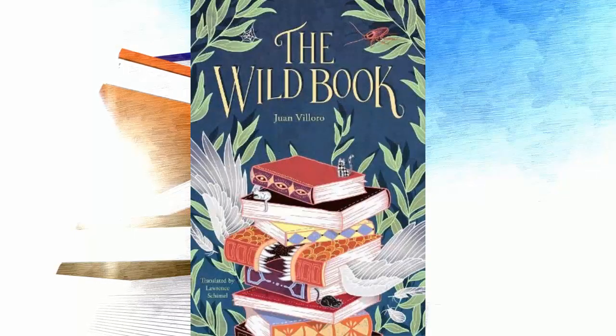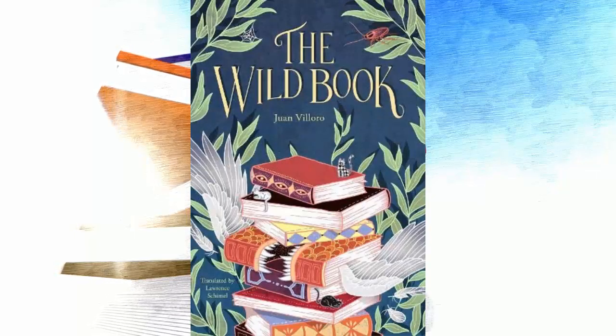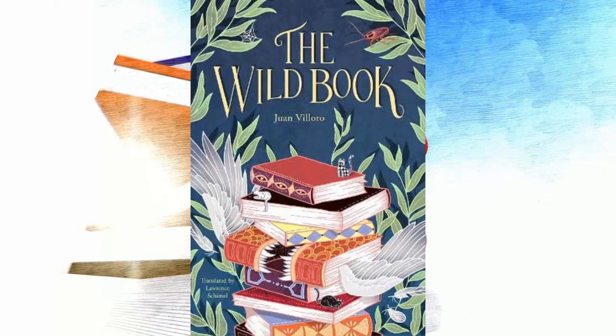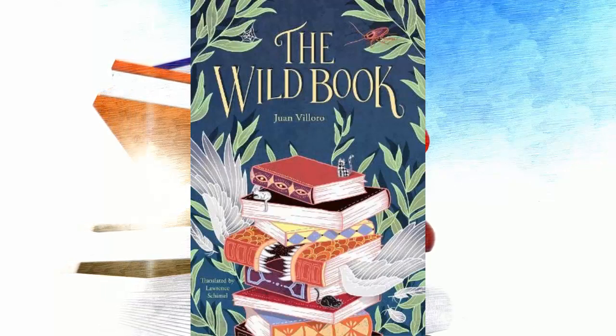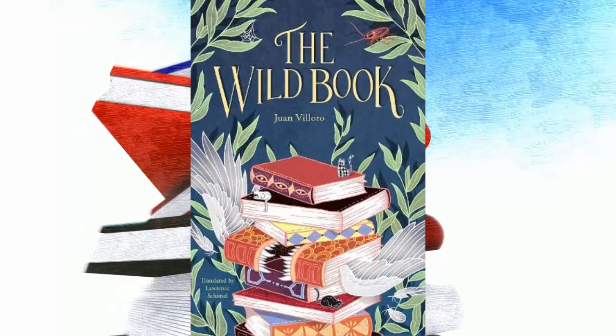The Wild Book is a book for children and young people, written by the novelist Juan Valoro. This book tells us about Juan, a boy who at the age of 13 faced the divorce that his parents were gradually carrying out.